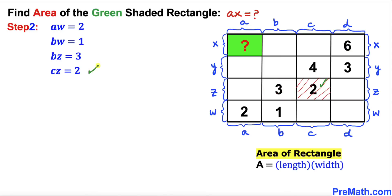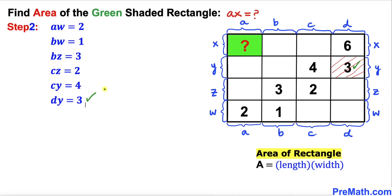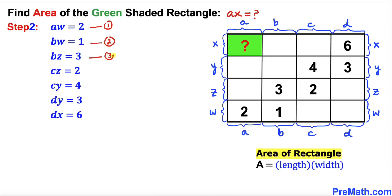The shaded rectangle with area 3 gives us d times y equals 3, and the shaded rectangle with area 6 gives us d times x equals 6. Let me call these equation 1, equation 2, equation 3, and the last equation as equation 7.